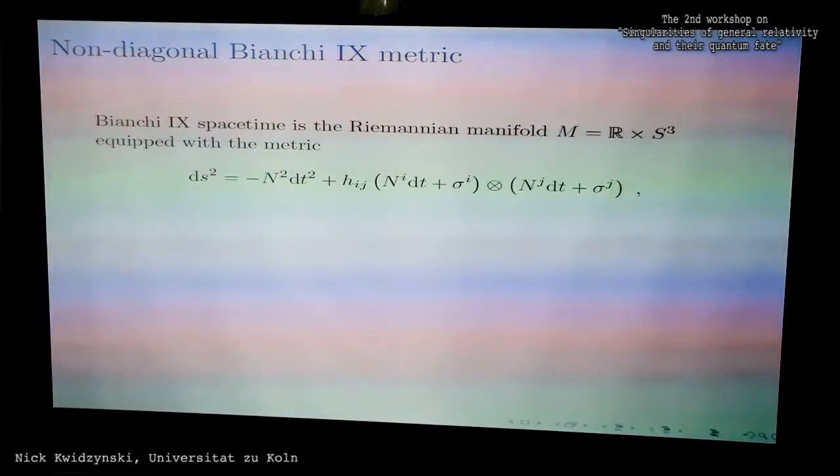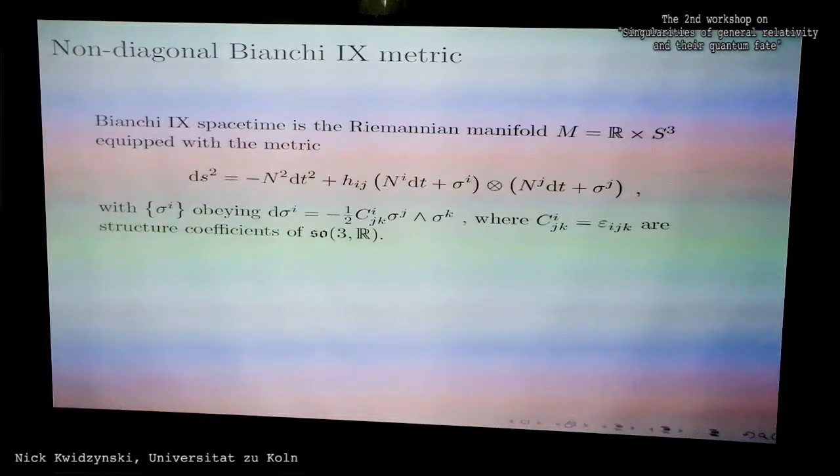The Bianchi IX spacetime is the Riemann manifold M with topology R times S3, equipped with the metric which I give here in the common ADM form. So n is the lapse function and the ni are the shift vectors. The sigma i are a non-coordinate basis and they obey the following algebra with the Cijk being the structure coefficients of the Lie algebra of SO(3).